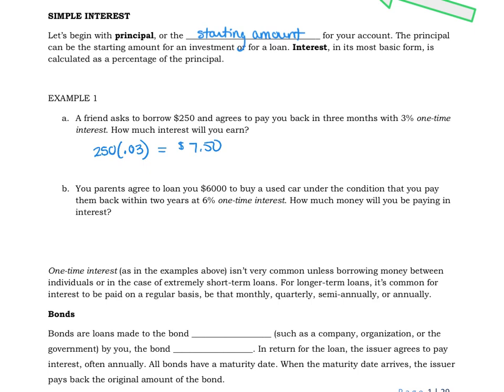If your parents agree to loan you $6,000 to buy a car and they say you need to pay us back in two years with 6% one-time interest, you will be paying them 6% of that $6,000. Again, write 6% as a decimal. You will pay them $360 in interest.